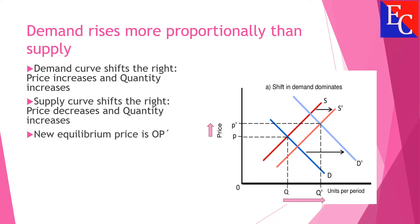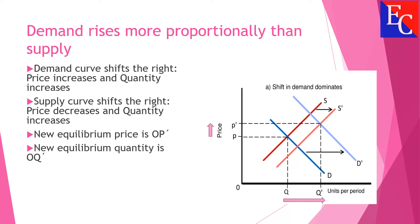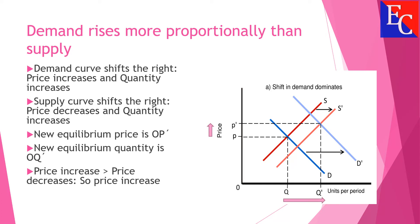The new equilibrium price is OP' and new equilibrium quantity is OQ'. In this case, demand rises more proportionally than supply, so the effect of increase in price is greater than the effect of decrease in price. Finally, price increases and quantity increases from Q to Q'.